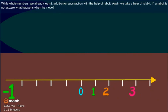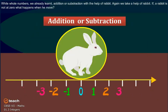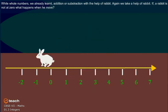With whole numbers, we already learned addition or subtraction with the help of rabbit. Again, we take the help of a rabbit. If a rabbit is not at 0, what happens when he moves?